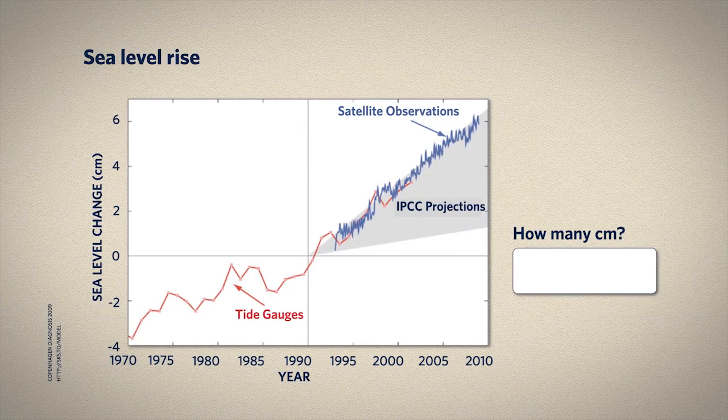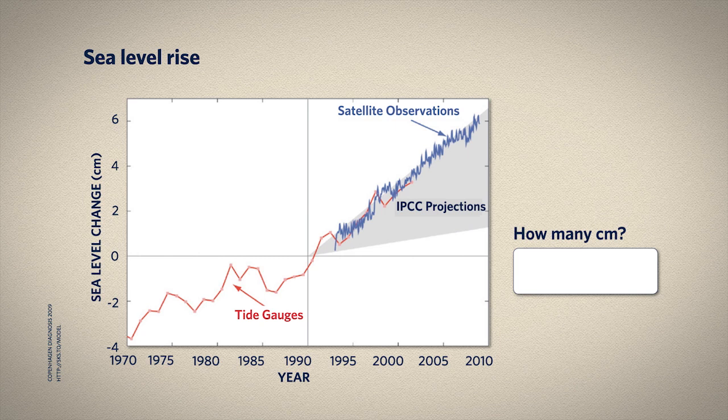Another option, of course, is to relocate to higher ground, but that can present a major challenge in places with lots of human infrastructure close to sea level. Let's use these data to make an estimate of how fast global sea level has risen since 1990. How many centimeters of sea level rise happened between about 1990 and 2010? In those two decades, sea level went up by a little more than 6 centimeters. From those data, the rate of rise turns out to have been about 3.1 millimeters per year.